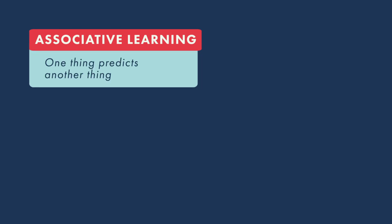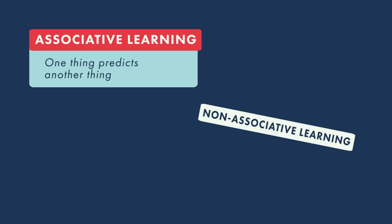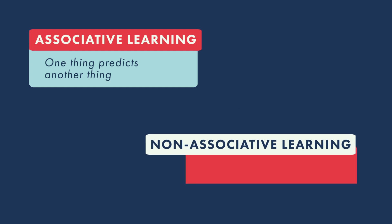There are two kinds of learning that we can think about. One is called associative learning — learning where one thing predicts another thing. A simpler form of learning is non-associative learning, which simply increases or decreases our response to something in our environment.